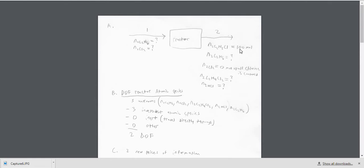Coming out, we know that we have 100 moles of C2H5Cl. We don't know anything about how much ethane comes out. We know that all the chlorine is consumed, so there's going to be zero moles of chlorine coming out. And then we know nothing about the HCl or the C2H4Cl2.